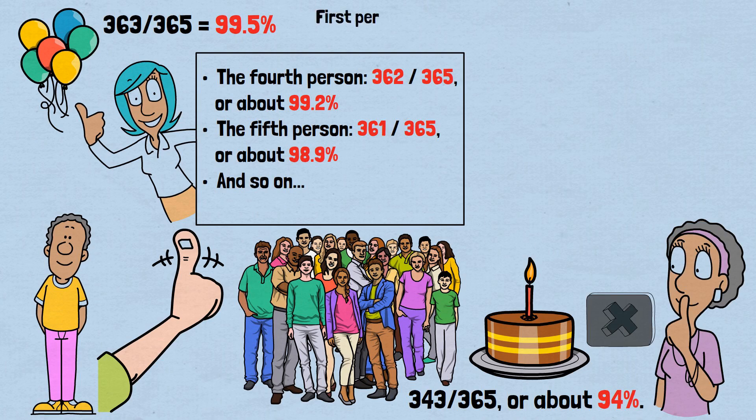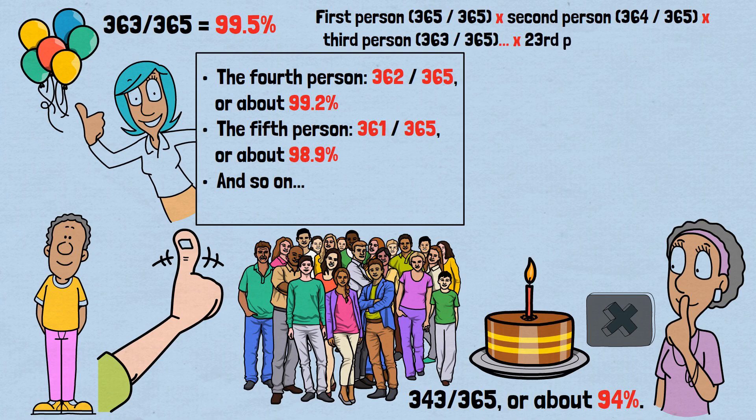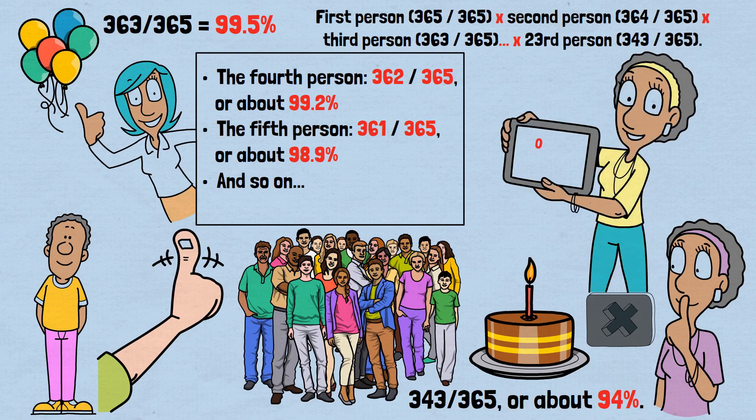First person, 365 out of 365, times second person, 364 out of 365, times third person, 363 out of 365, all the way to the 23rd person, 343 out of 365. After doing this multiplication, we get approximately 0.493, or about 49.3%. This means there's a 49.3% chance that all 23 people have different birthdays.